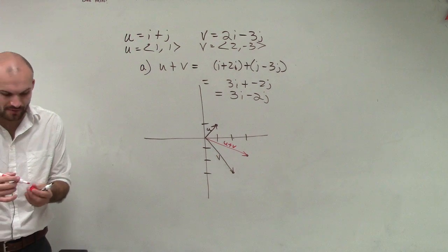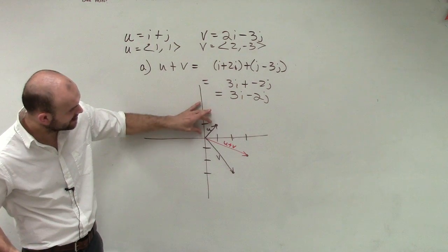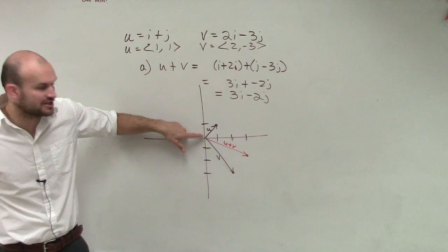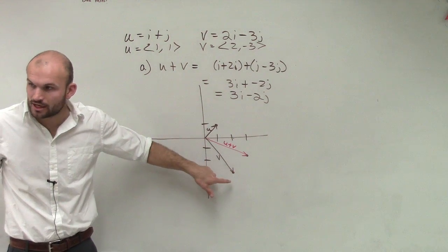But what's the other way to do this? Remember, what we could do to find this is we can transpose one vector to the end of the other vector. Take the initial point of one vector and transpose it to the terminal point of your other vector.